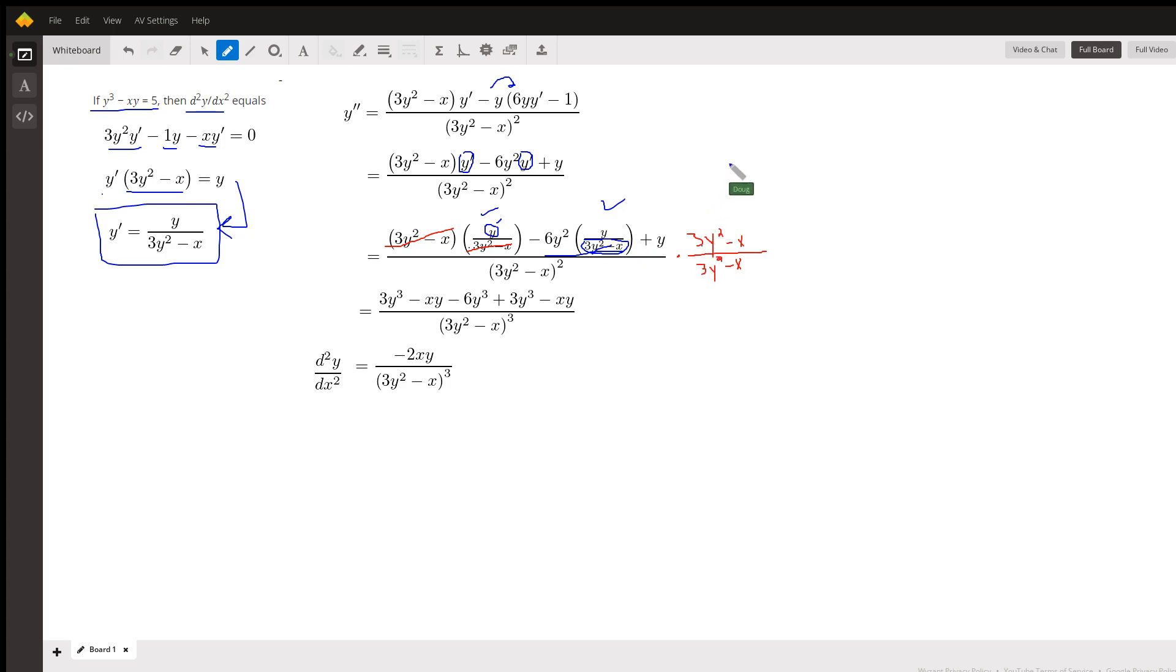And that's wrong. Oh, no, it isn't. Because these have canceled out. So I'm left with minus 6y cubed. And then plus y times 3y squared minus x is 3y cubed minus xy. And when I take this factor times this denominator, I just increase that exponent by 1.